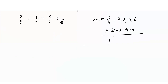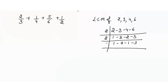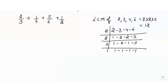Using the prime factorization method again, we divide with 2: 2 1s are 2, 2 2s are 4, 2 3s are 6. Then again divide with 2: write down 3, 1, 3. Then divide with 3: 1, 1, 1 and 1. So the LCM equals 2 × 2 × 3, which is 12.